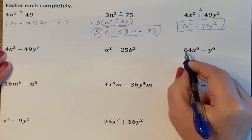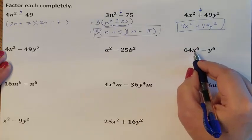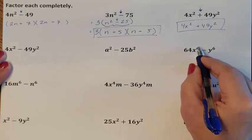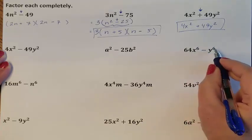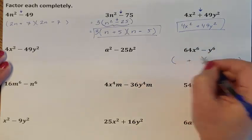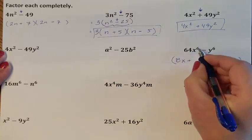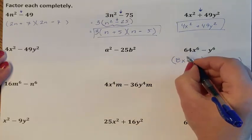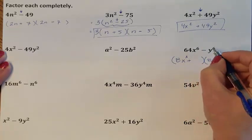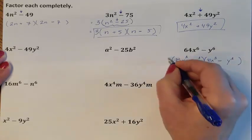Can I take the square root of 64x to the sixth? The square root of 64 is 8. X to the sixth — remember, if you're square rooting, you divide that exponent by 2. 6 divided by 2 is 3, so you can do this one. Here are my two parentheses. The square root of 64 was 8. For the x's, take the exponent 6 and divide by 2 to get 3, so my fronts are 8x to the third. For the y's, take the exponent and divide by 2 to get y to the third. And this is my answer.